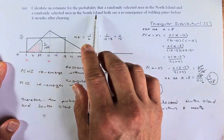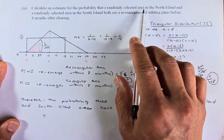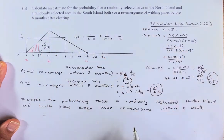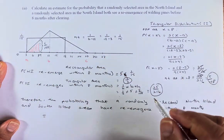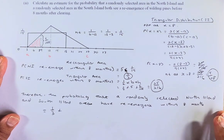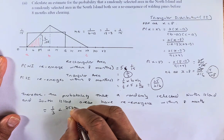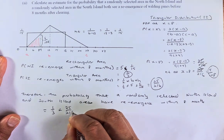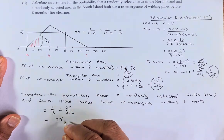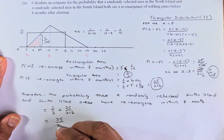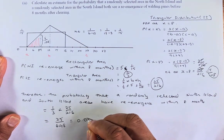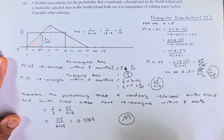The question asks: what is the probability that a randomly selected area in the North Island and a randomly selected area in the South Island both see re-emergence before 8 months? We're going to multiply the two probabilities: 1 third times 25 over 216. The numerator is 25 and the denominator is 648. Put in your calculator in decimal, it comes to 0.0386, and that will give you a merit.